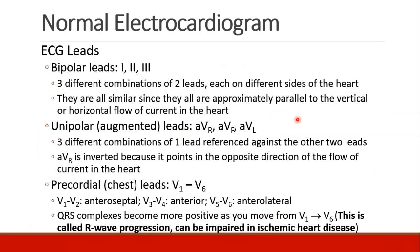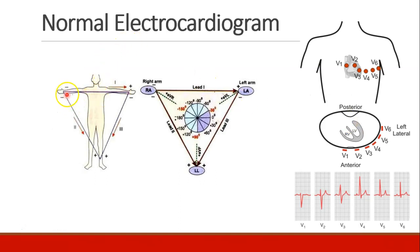There are three different kinds of leads in a 12-lead EKG. The bipolar leads are called 1, 2, and 3 — three different combinations of two leads, each on different sides of the heart, and all roughly parallel to the flow of current in the heart. Here we can see the right arm, left arm, and left leg electrodes. Lead 1 goes right to left, leads 2 and 3 move right to left and head to foot.